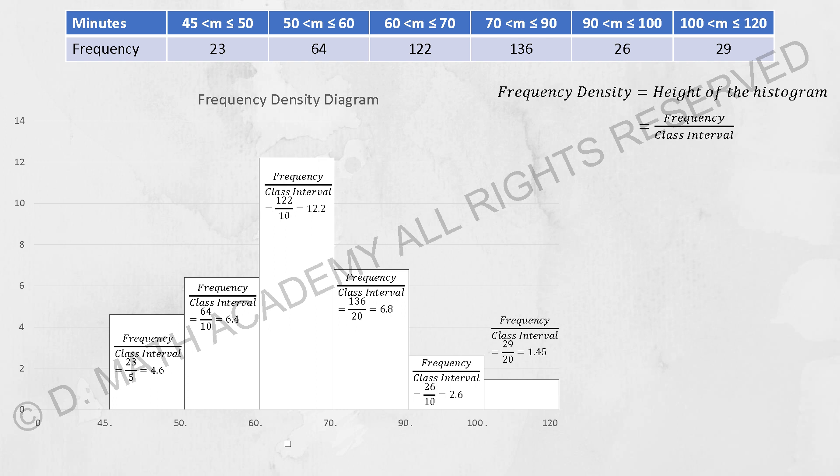Let's say we have 64 divided by 10, we get 6.4. We have 122 divided by 10, we get 12.2. We have 136 divided by 20, we get 6.8. We have 26 divided by 10, we get 2.6. And we have the last group, which is 29 divided by 20 equals to 1.45.